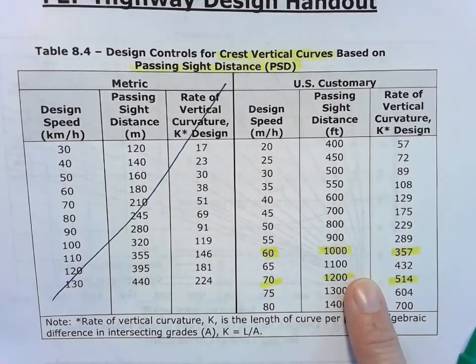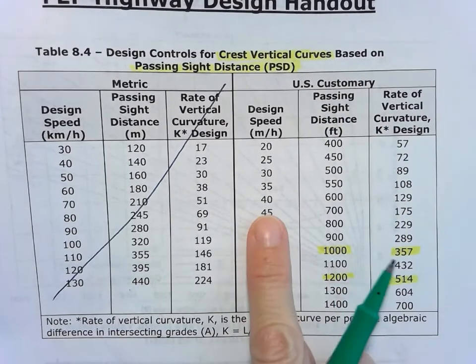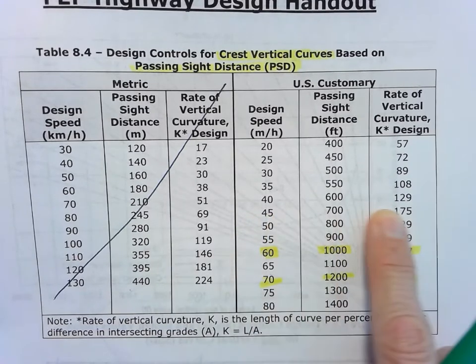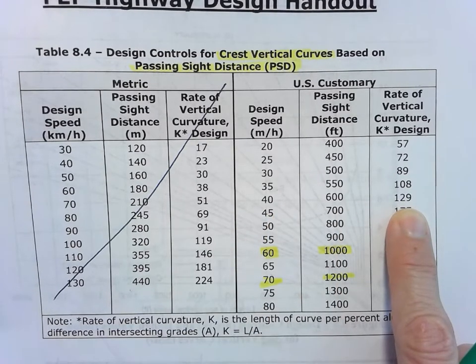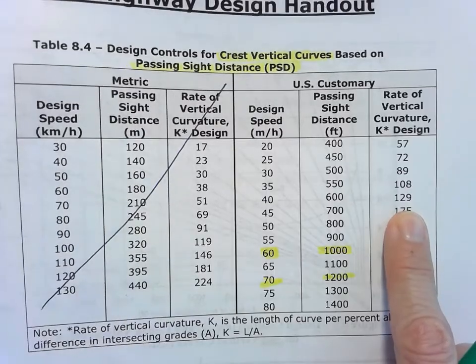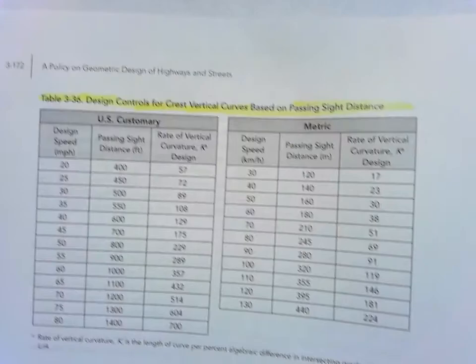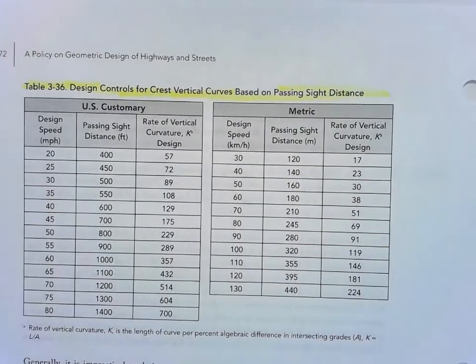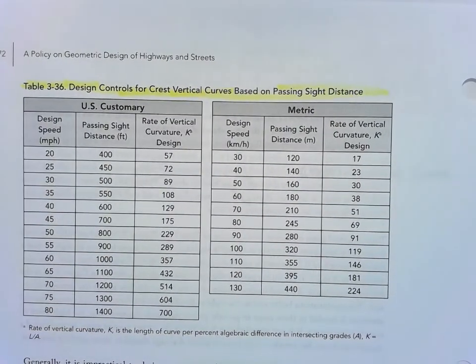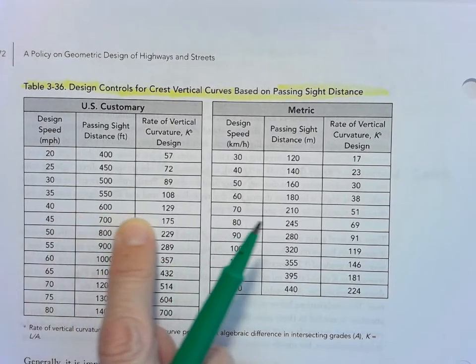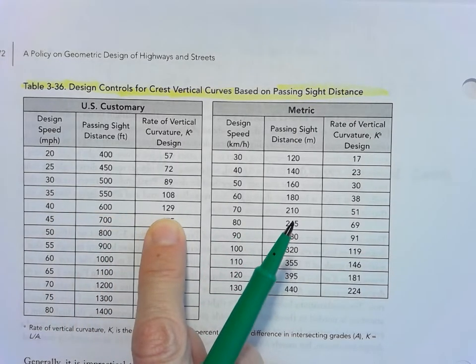In this case, we have a design speed of 40 miles per hour. So we go straight across, and we can see that our K factor there is 129. So this is just a reprint of the table from the 2018 AASHTO book, a green book. It's table 3.36. And again, for our design speed of 40 miles per hour, we see that our rate of vertical curvature, K design, is 129.